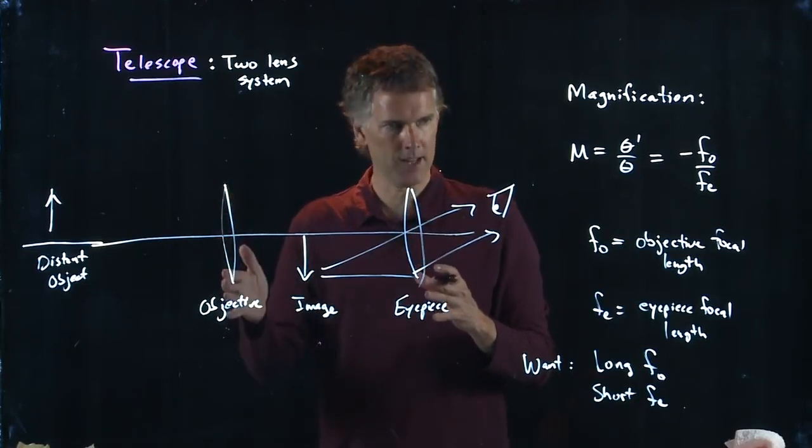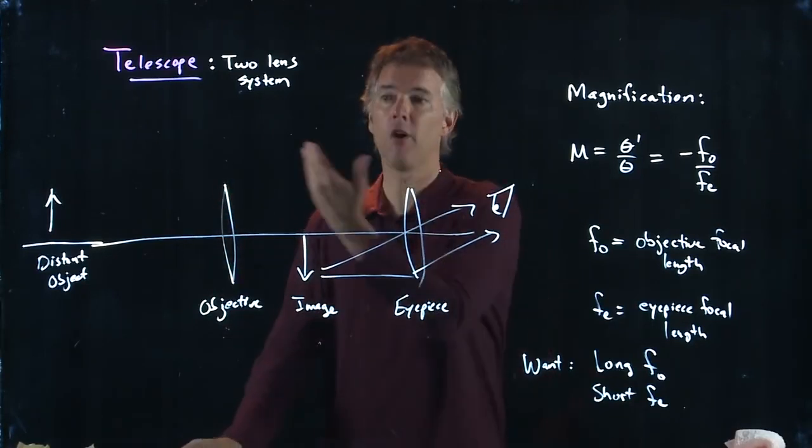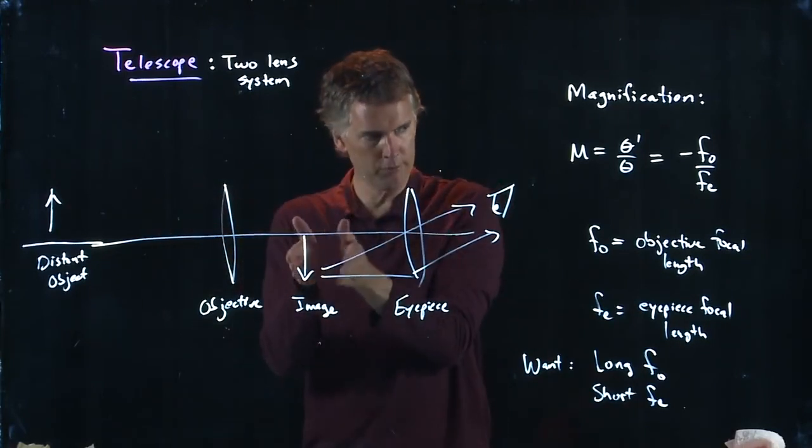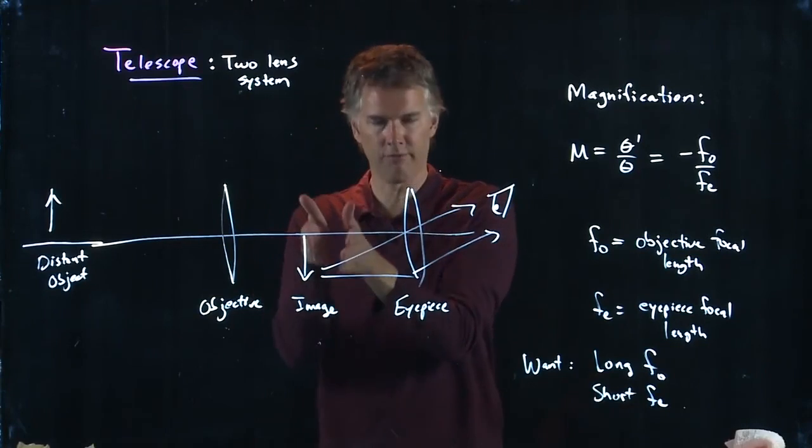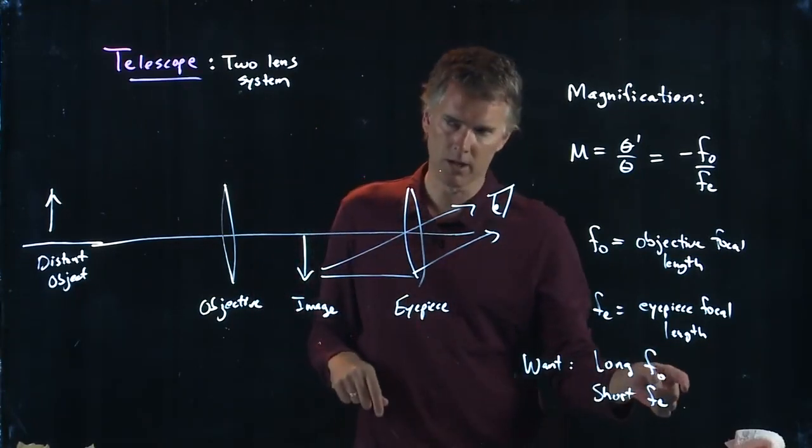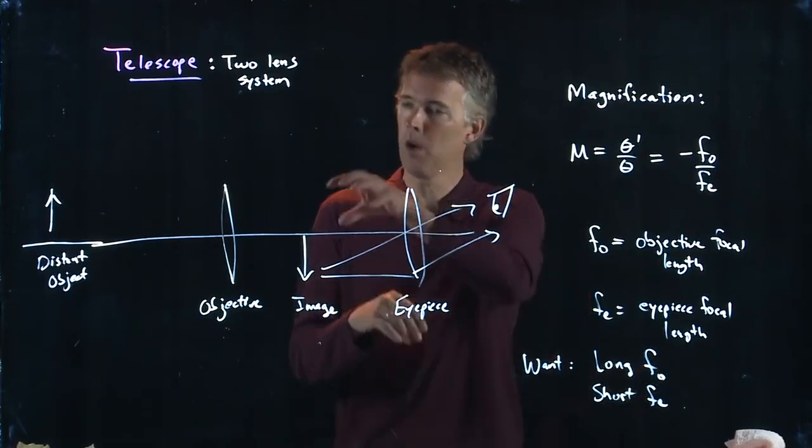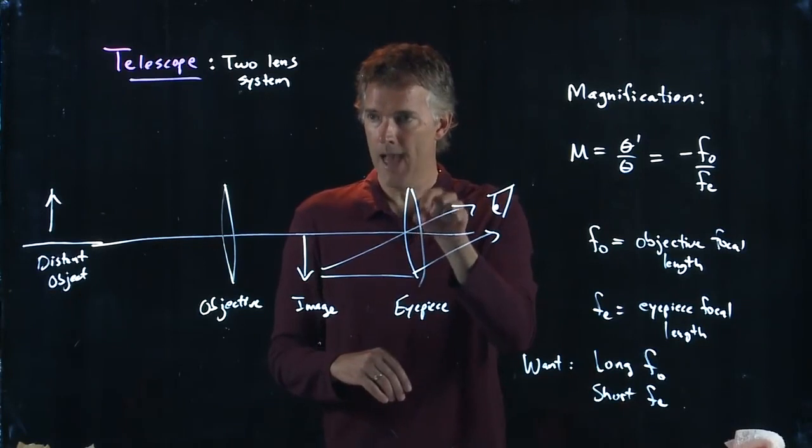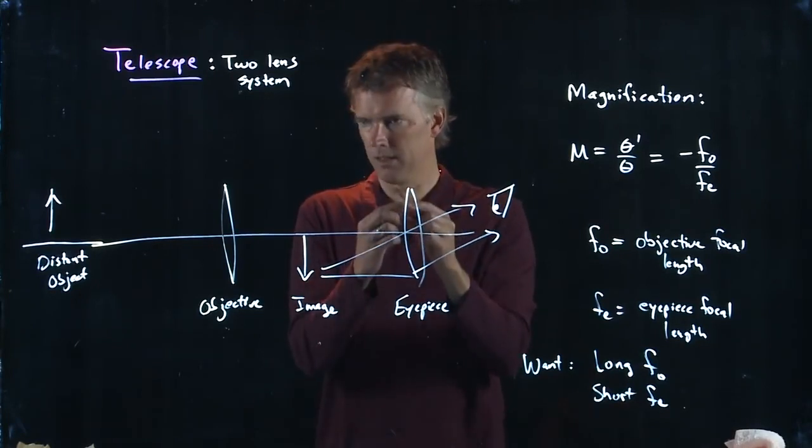that first lens that it hits is very far away from your eyeball. But the one at the other end of the telescope, the one right next to your eyeball, that has a very short focal length lens,